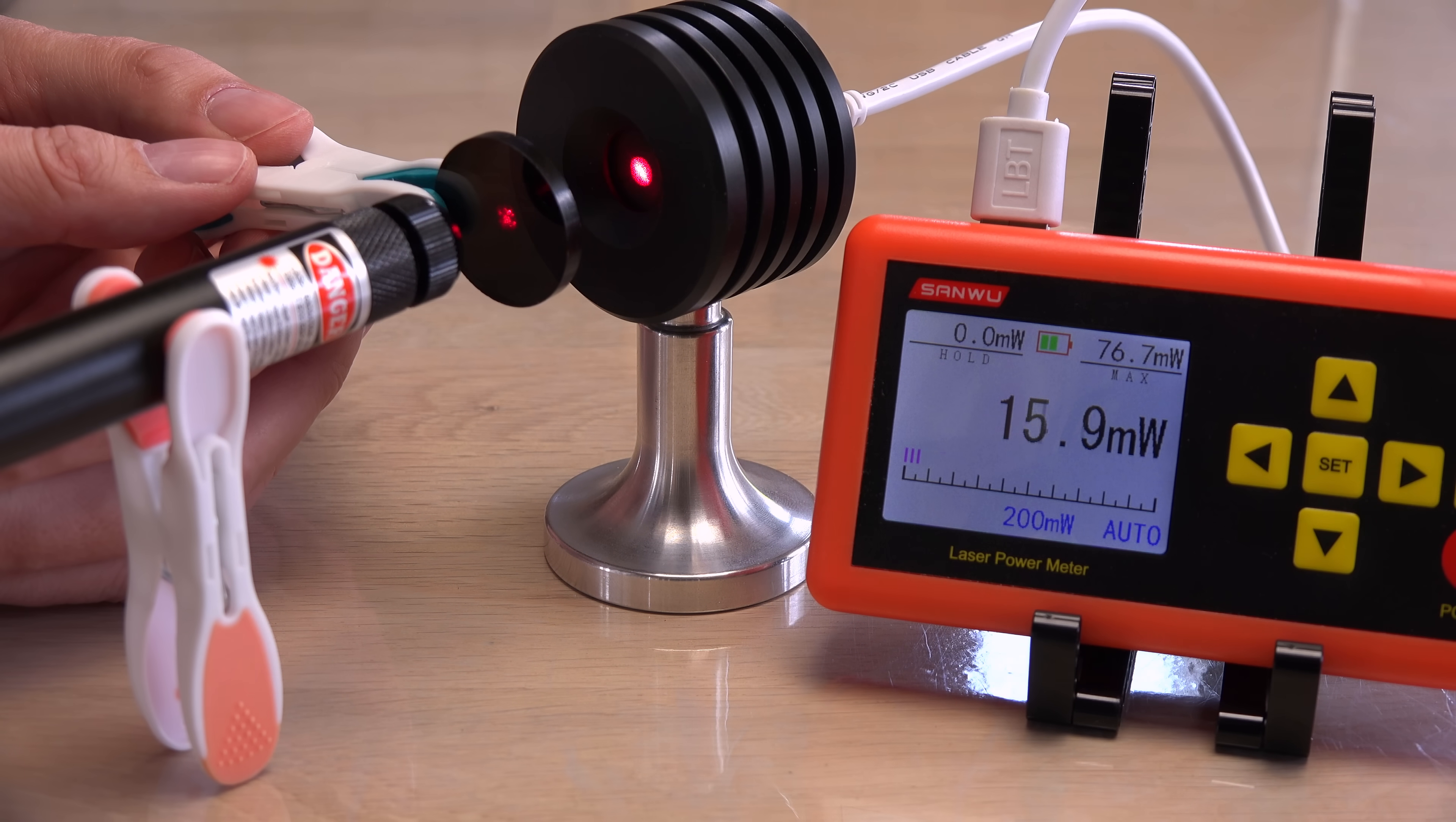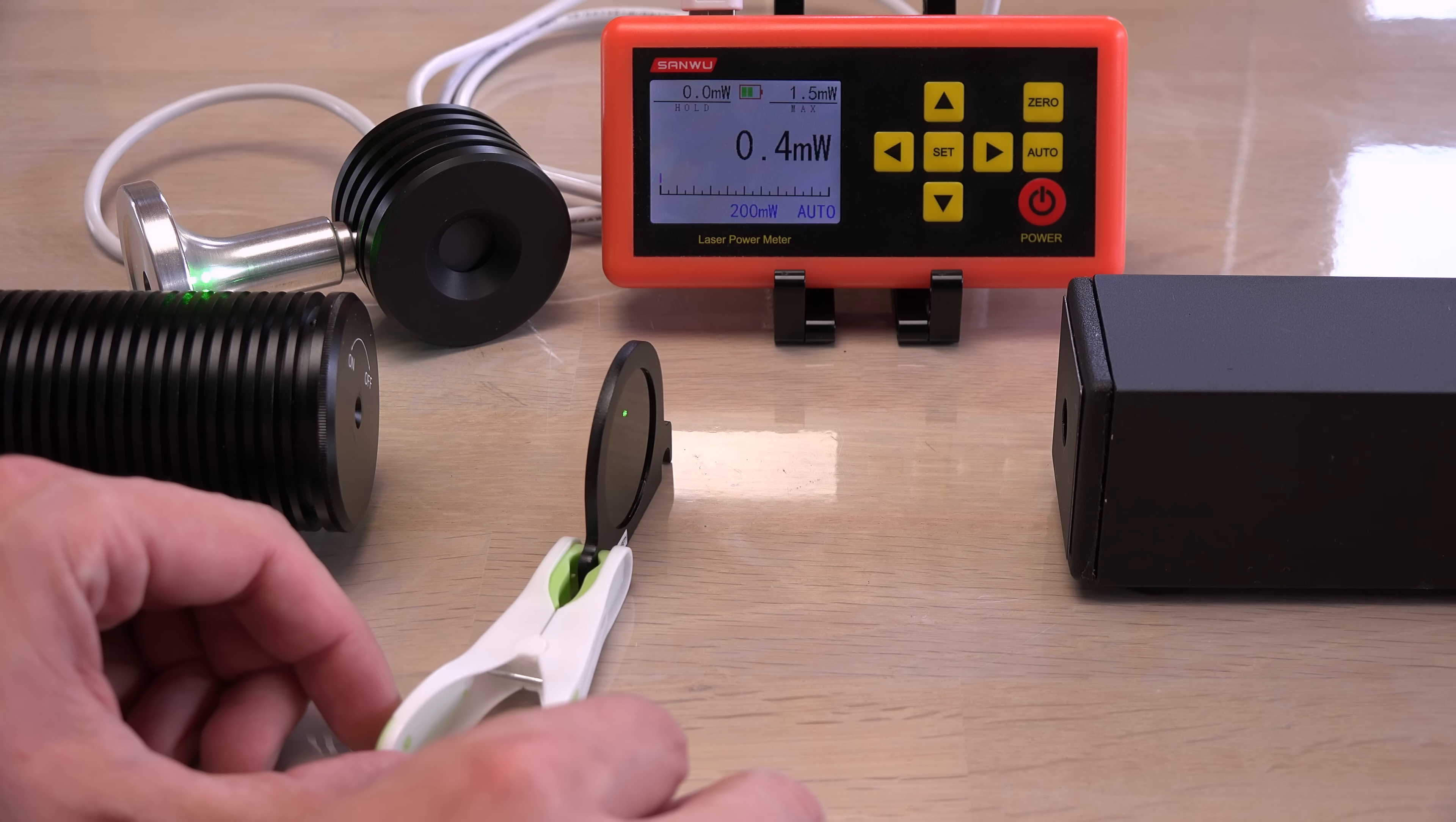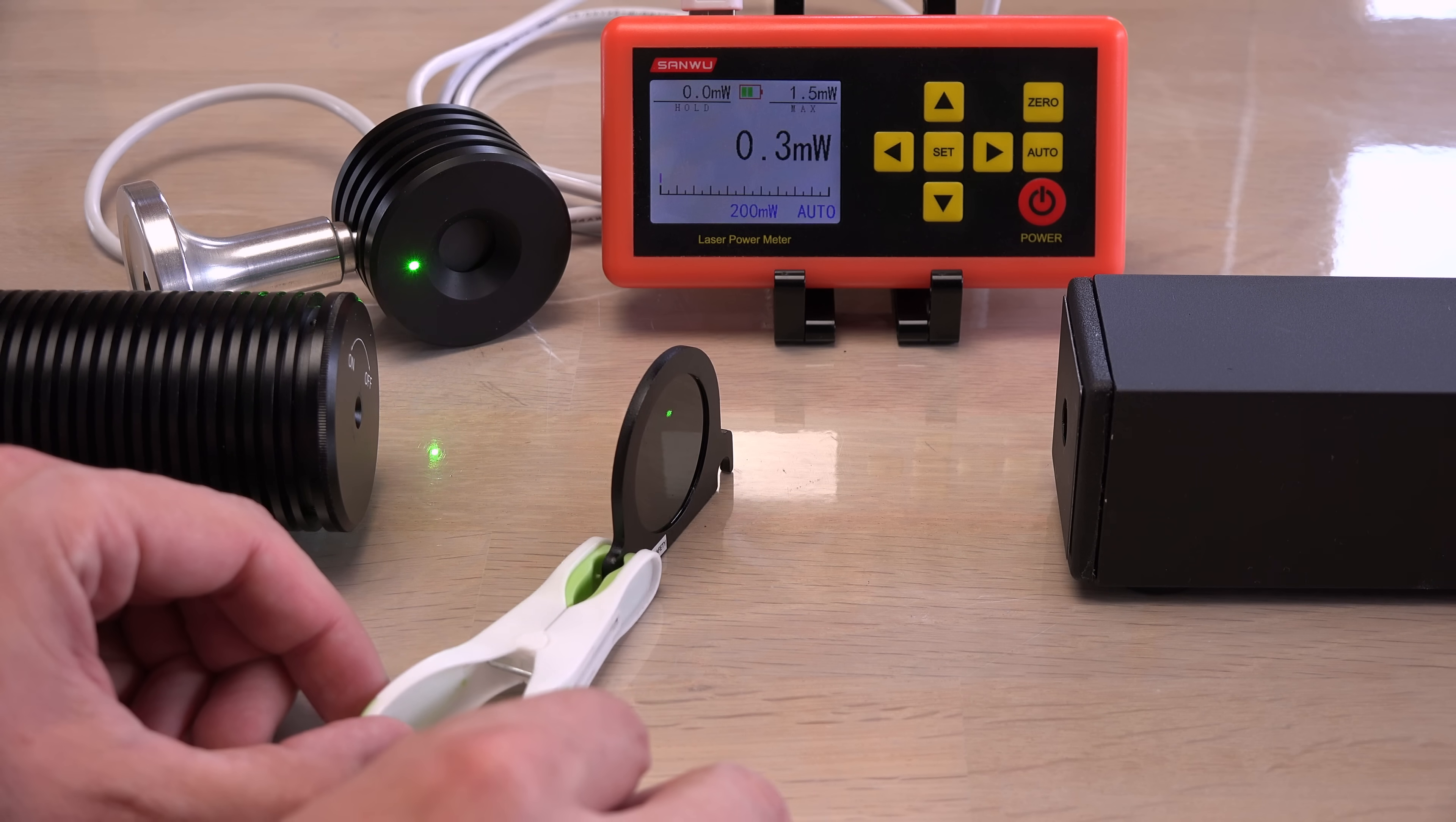For now my best advice is to use an ND filter if you want to lower a beam's power. However, it adds a secondary safety issue you need to be aware of. More after a short message.